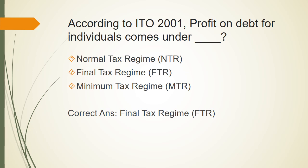According to ITO (Income Tax Ordinance 2001), Profit on Debt for individuals — 'Profit on Debt' is a term used for any profit earned on something, such as profit or interest earned on bank deposits. This ordinance uses the term 'Profit on Debt' for any profit received. There are three regimes: Normal Tax Regime (NTR), Final Tax Regime (FTR), and Minimum Tax Regime (MTR). Profit on Debt is taxed at a specific percentage on the gross amount — it falls under FTR, so total income calculation is not required.